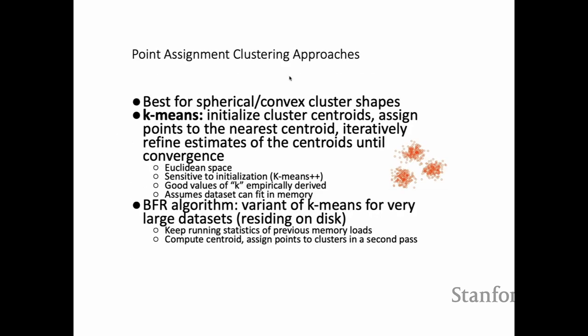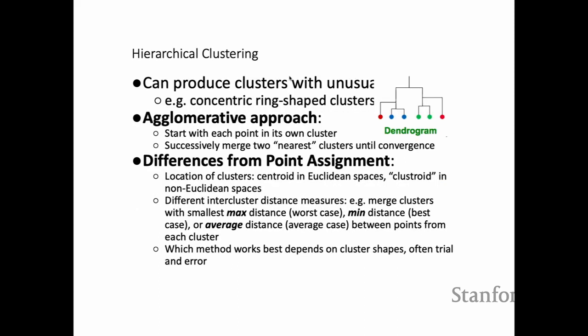For point assignment, we discussed k-means, as well as a modification called the BFR algorithm, which allows you to run k-means on very large datasets. For hierarchical clustering, you merge clusters based on a measure of distance — you can use max distance, mean distance, or average distance to merge. In some cases this may be better than k-means because hierarchical clustering can find ring-shaped clusters that k-means sometimes cannot.